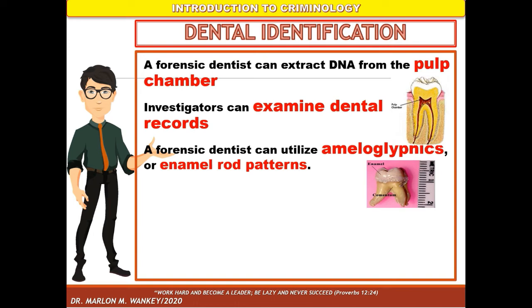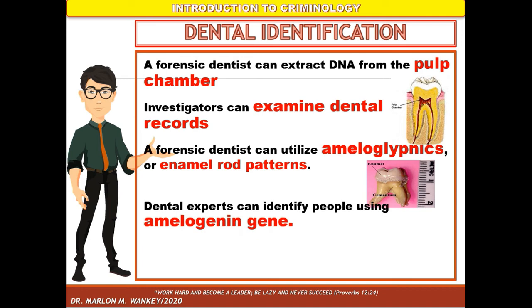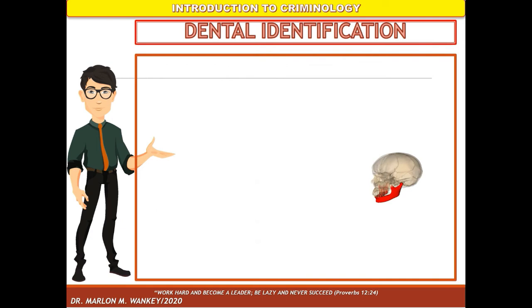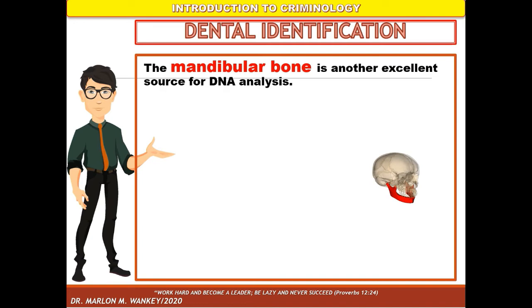Like fingerprints, enamel rod patterns are unique to each individual. Unlike fingerprints, they are highly resistant and cannot be intentionally burned or cut to change the pattern. Similarly, investigators take enamel rod prints. Dental experts can also identify people using amelogenin — a gene extracted from the pulp of a tooth and analyzed using a polymerase chain reaction to determine the sex of the victim. Blood is often unavailable in the examination of deceased victims, but teeth and bones provide accurate DNA access. The mandibular bone is another excellent source for DNA analysis — easily accessible and removable — and provides accurate identification of a person's age and sex.